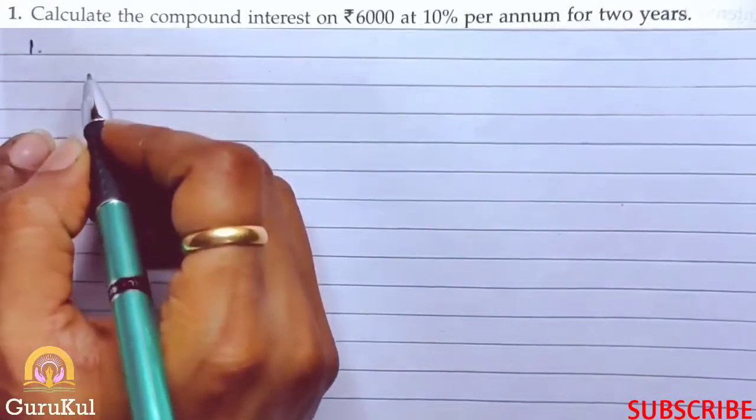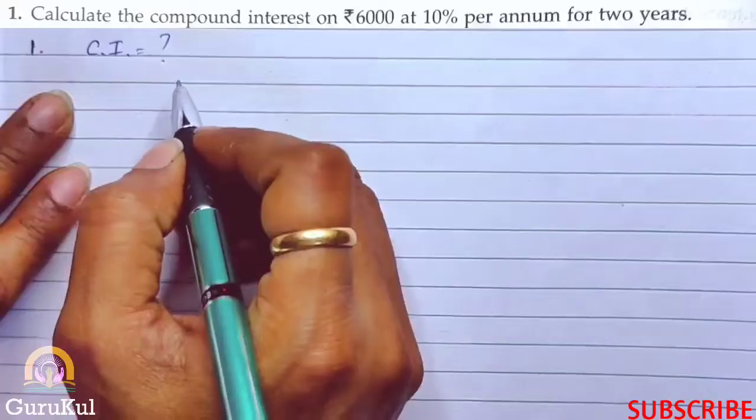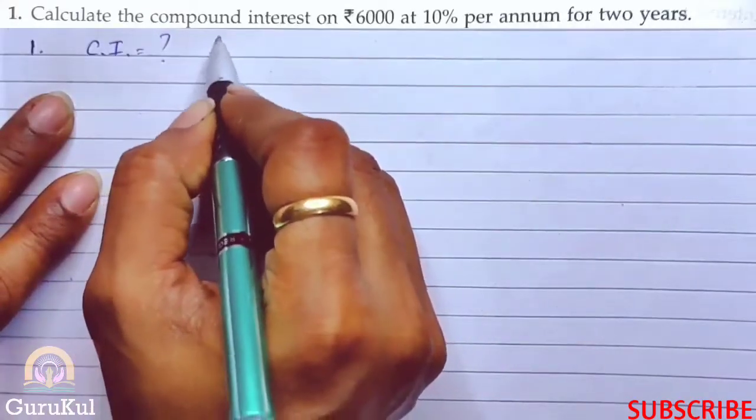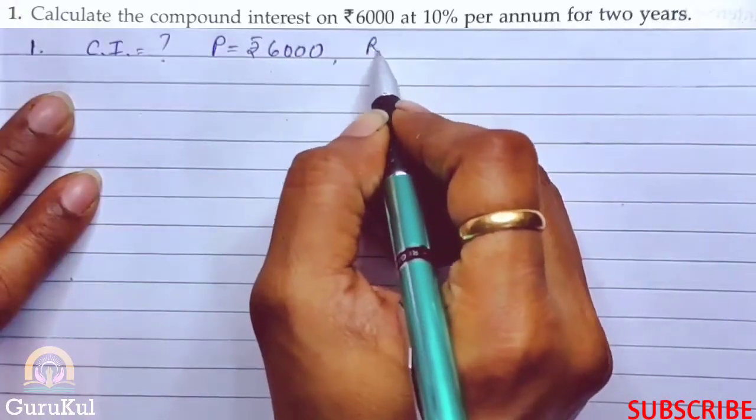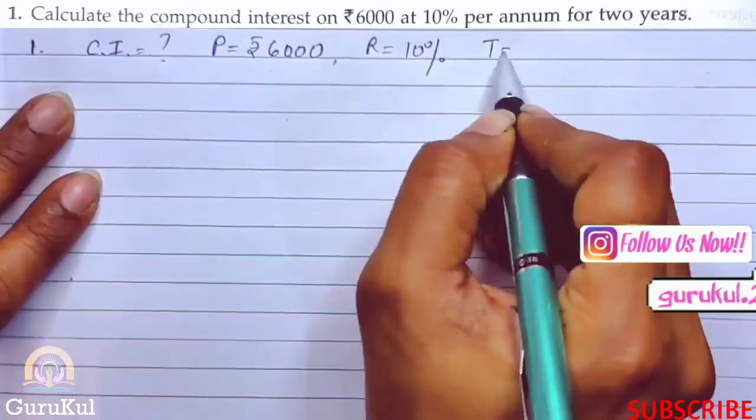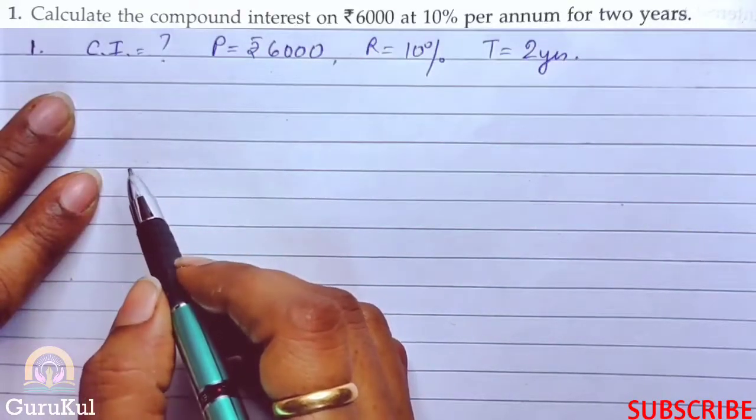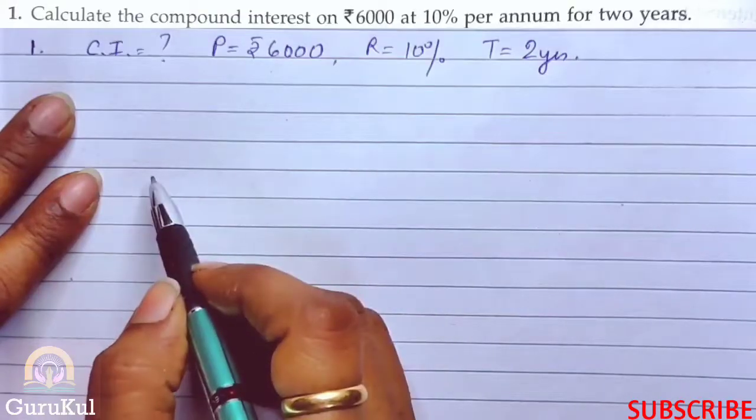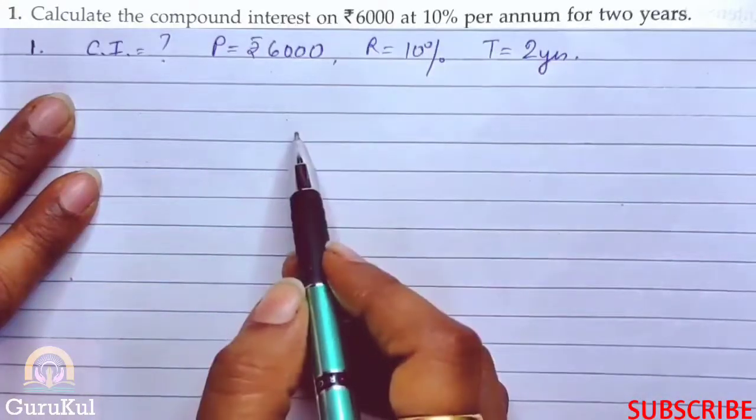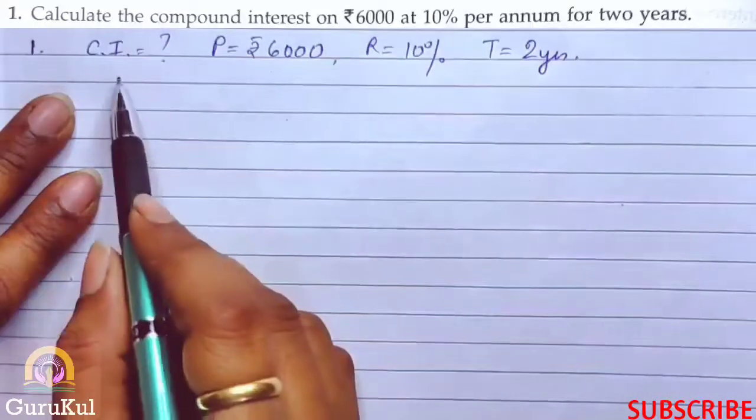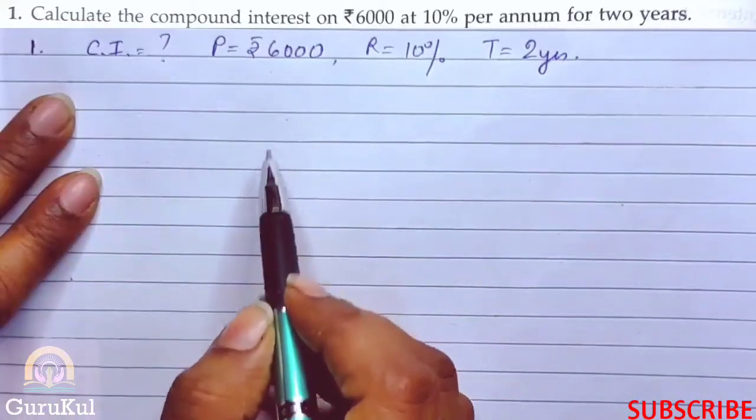Now question number 1: Calculate the compound interest on ₹6000 at 10% per annum for 2 years. So the principle is ₹6000, rate is 10%, and time is 2 years. Compound interest is calculated annually, that means once in a year. But in the case of compound interest, if there are 2 years, we will calculate one year at a time.